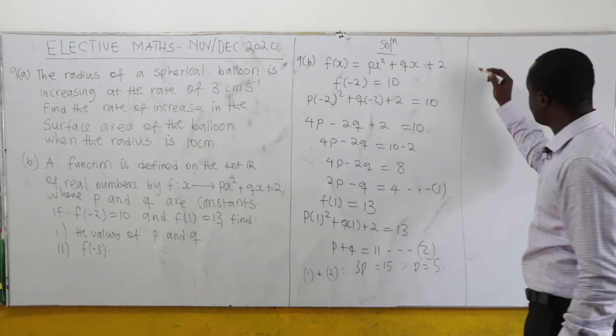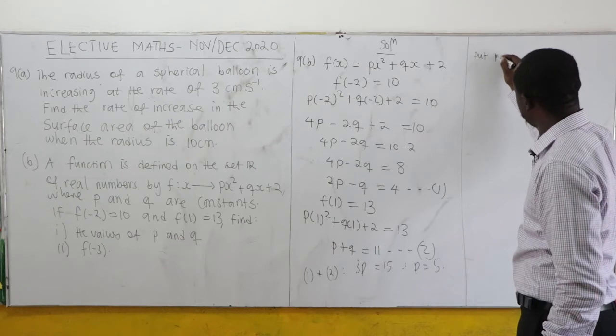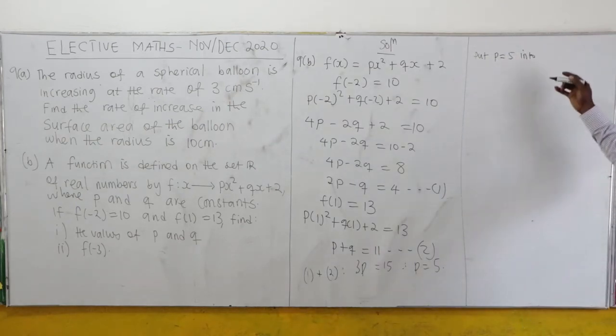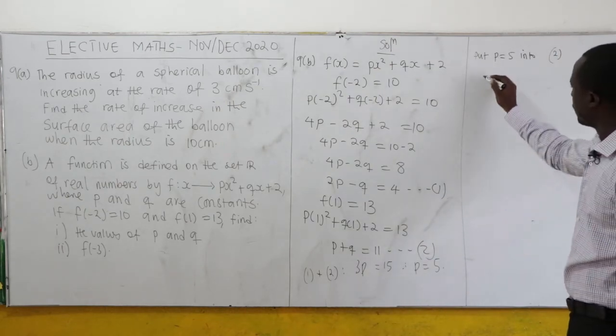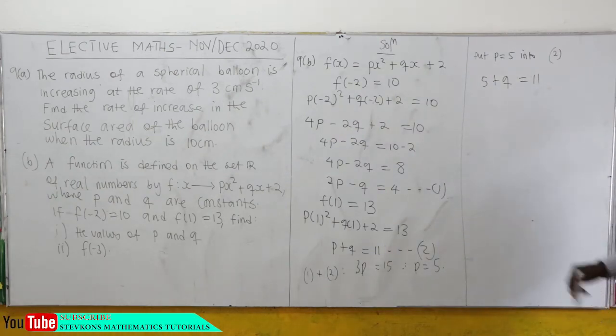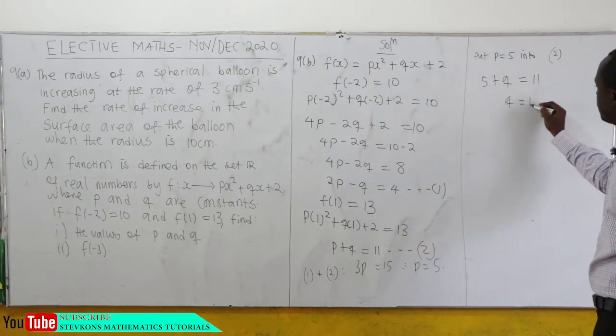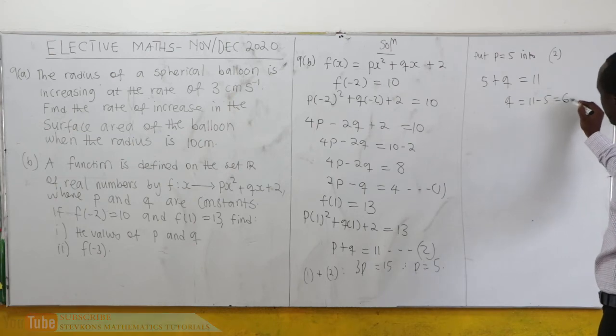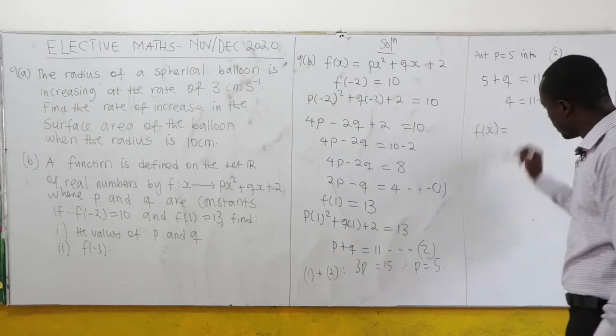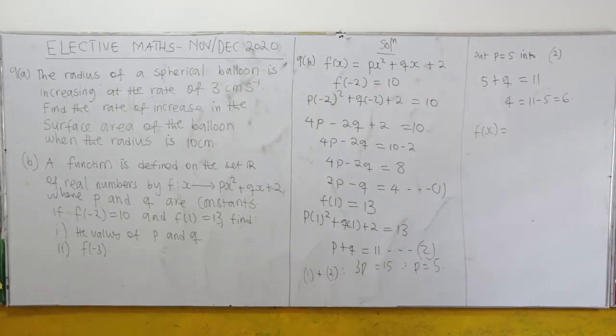Substituting p = 5 into equation 2: 5 + q = 11, so q = 6. Hence f(x) = 5x² + 6x + 2.